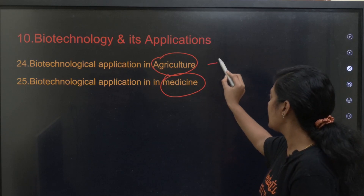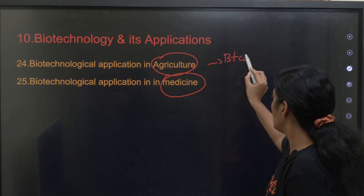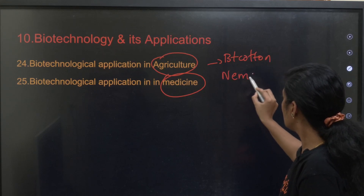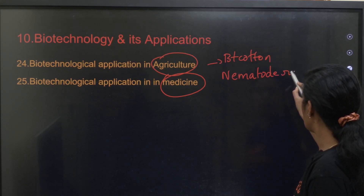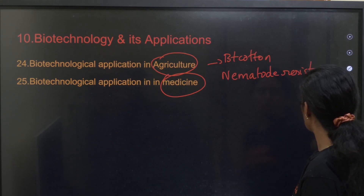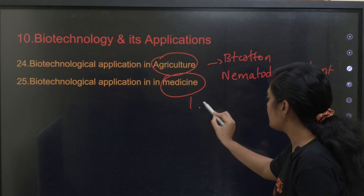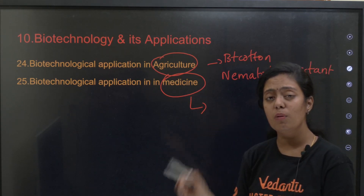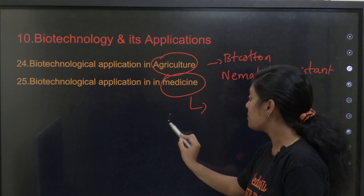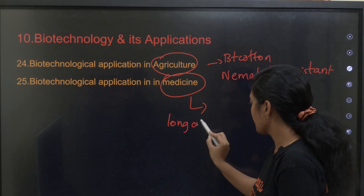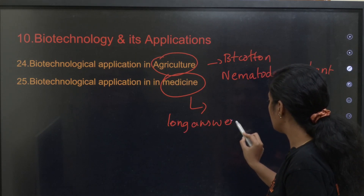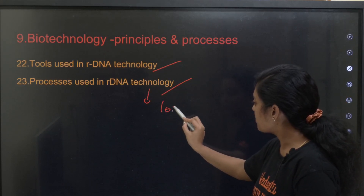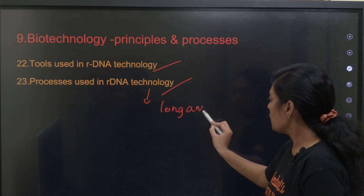Coming to Unit 10 — applications of biotechnology — in agriculture you have Bt cotton and nematode-resistant plants, which are both very important topics. In medicine, topics include gene therapy and insulin as examples. You can expect long-answer questions from biotechnology applications and from processes in the principles chapter.